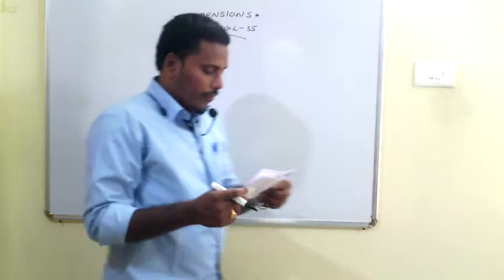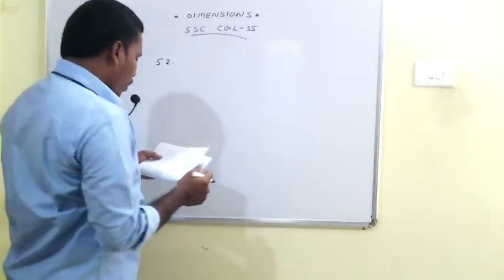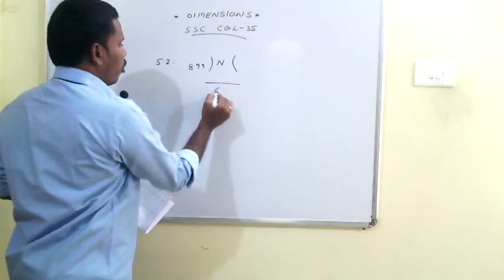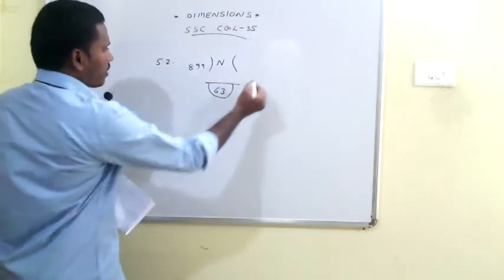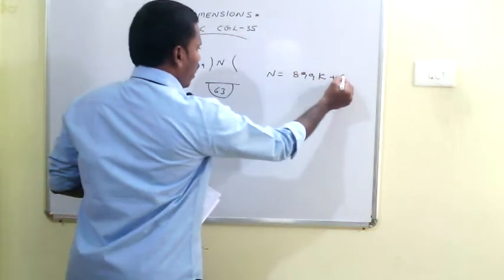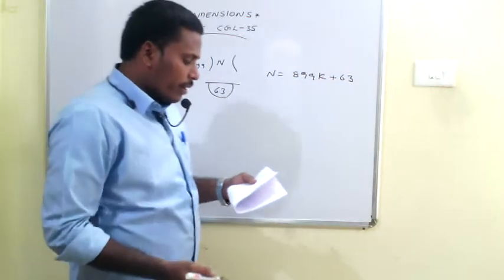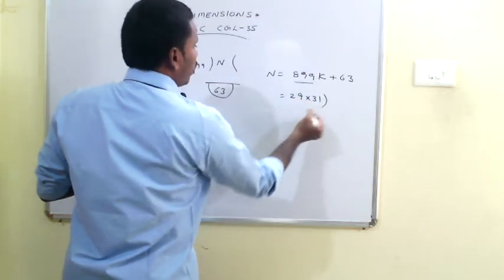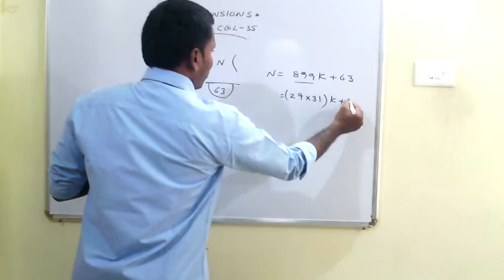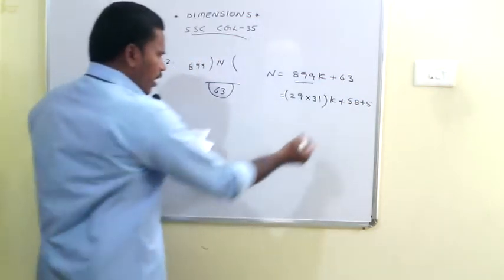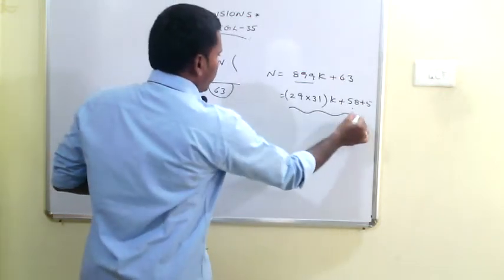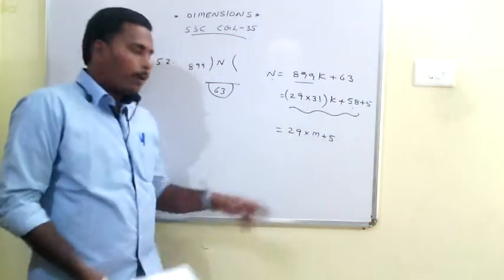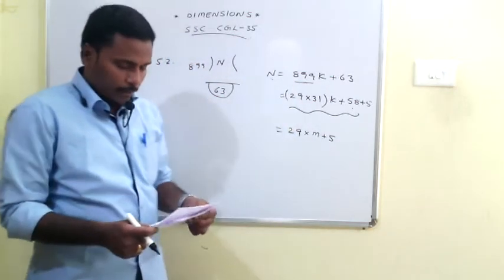The 52nd problem: a certain number when divided by 899 leaves 63 as remainder. We write this as n = 899k + 63. They ask for the remainder when the same number is divided by 29. We express 899 as 29 × 31, and 63 as 58 + 5, where 58 = 29 × 2. So n = 29m + 5, meaning 5 is the remainder when n is divided by 29.